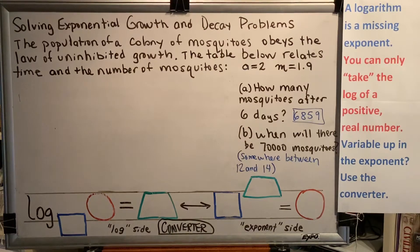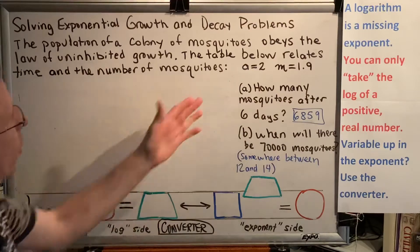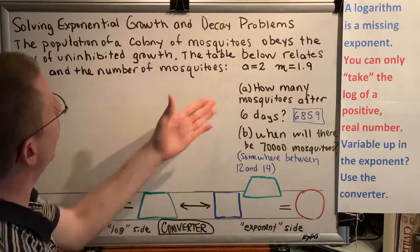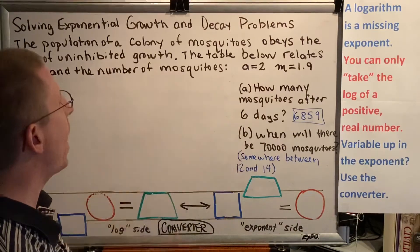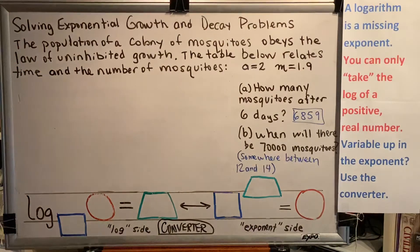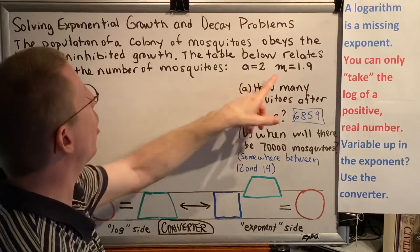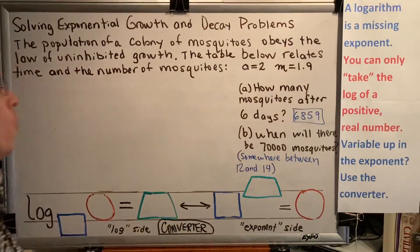The topic of this video is solving exponential growth and decay problems. This is a continuation of the previous video. Let's briefly recap. We've got a colony of mosquitoes that's growing. We tried to use the short method using patterns to solve both questions. We were able to use patterns to solve part A but not part B, which means now we have to use the exponential law equation to solve part B. We discovered that A, the adder, was 2, and M, the multiplier, was 1.9.